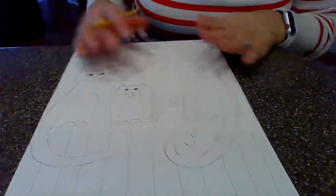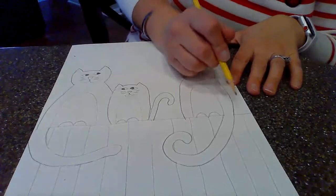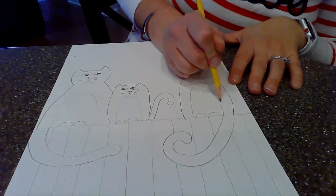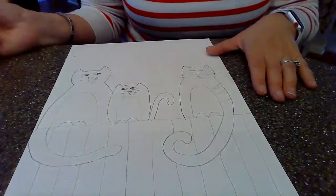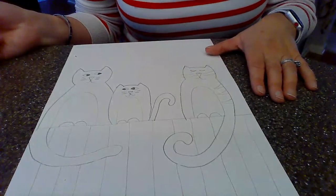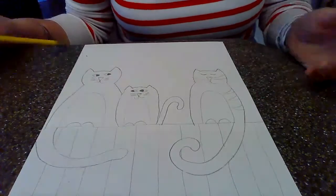From there, you can be done if you don't want to add any more details. Or you can add stripes to your cats. If you want to add stripes, I would just do some easy triangles. And that's really all you need for this.